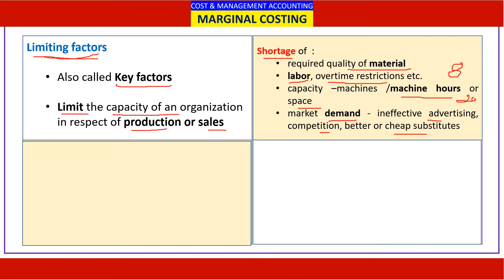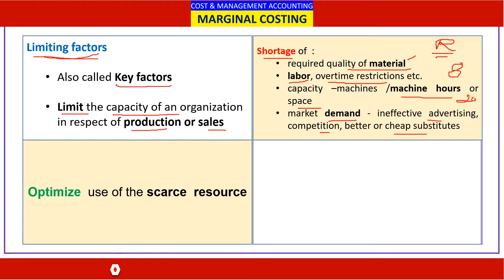A limiting factor limits our ability to maximize profitability due to shortage of resources. When there is a shortage of time or money, we always go for rationing. Rationing is the concept used whenever a person is short of time, money, or resources. Scarce resources should be used with the strategy of optimizing — maximizing the maximum benefit that can be derived. This involves proper planning, rationing, prioritizing, and allocation.